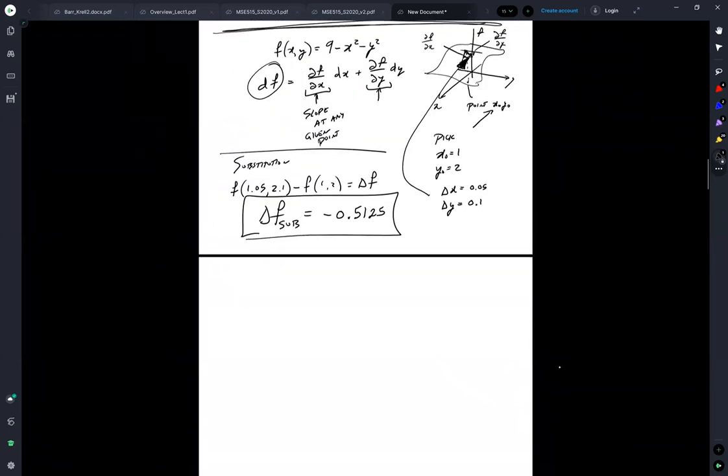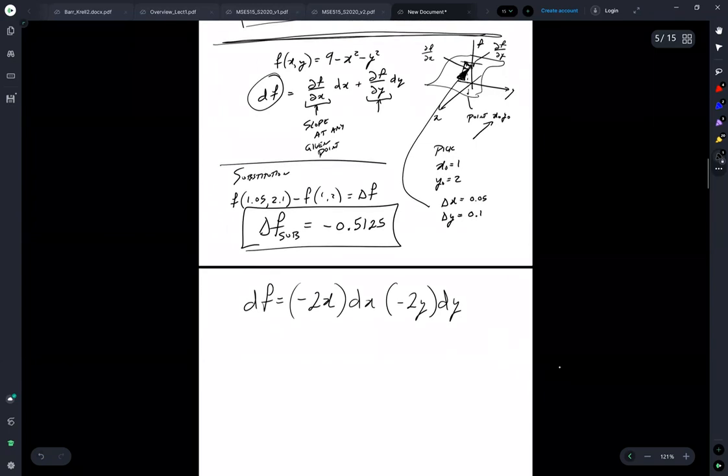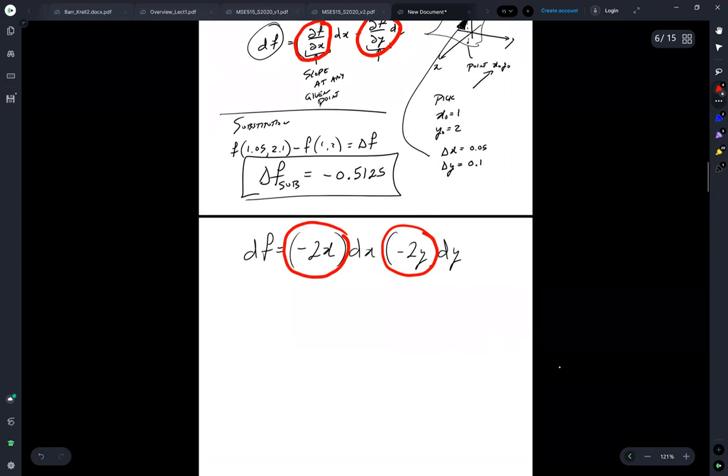But using a differential form, taking our partials with respect to x and y here and here, you can see we get an approximate, and you substitute in and get minus 5.0.